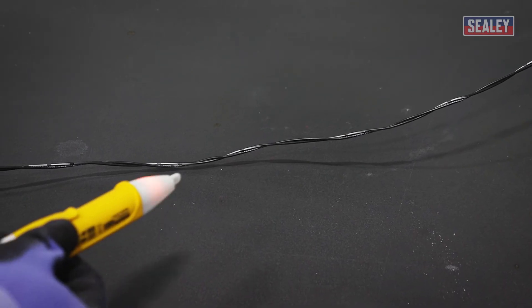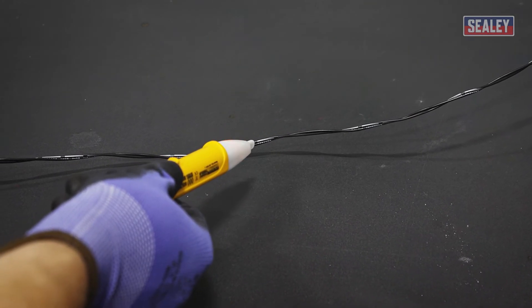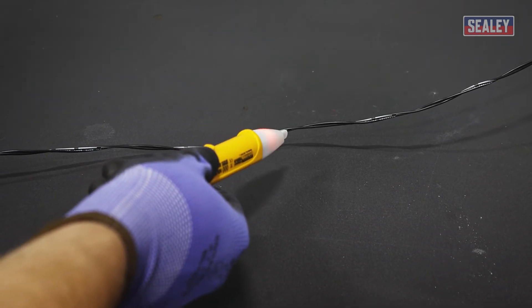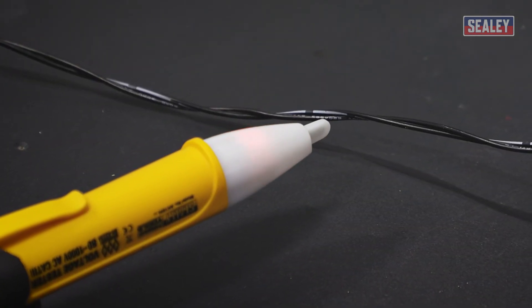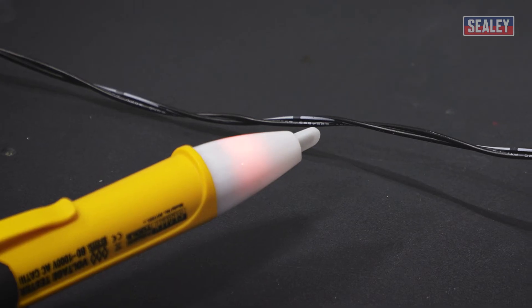To use, bring the probe in close proximity to a conductor. If the presence of an AC supply voltage is detected, then the red LED will flash and continuously beep.